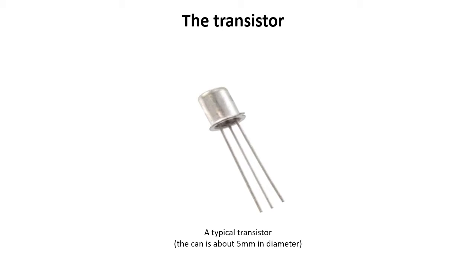Transistors have largely replaced valves because they do not need a heater which reduces their power consumption and eliminates the delay when valve heaters warm up. They are very small in size and weight. Large numbers of extremely small transistors can be manufactured as a single integrated circuit. Low operating voltages mean they can operate with small batteries, and they are much more rugged than valves.